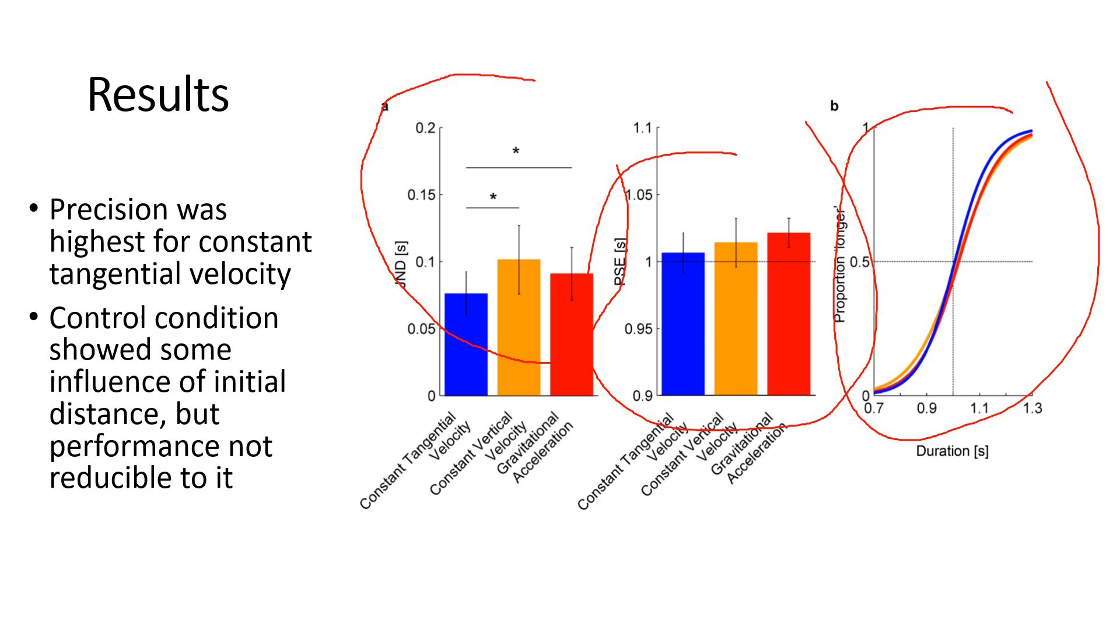I unfortunately don't have a plot for the control conditions but we did analyze the data for that as well and we found evidence that people were also using the distance to decide between the two parabolas but they didn't decide solely based on the initial distance. Also a little surprise there. Humans usually just use most of the time just use all the information they can get to do a task.